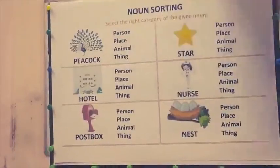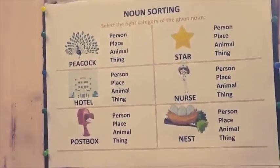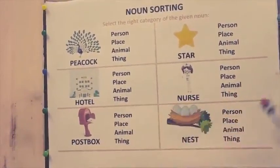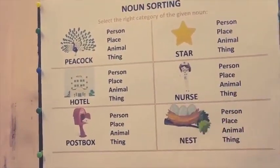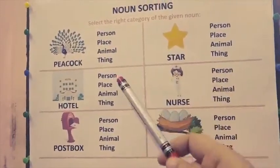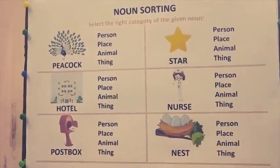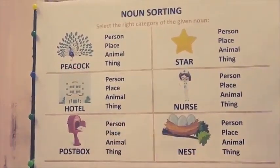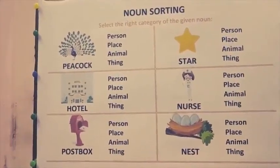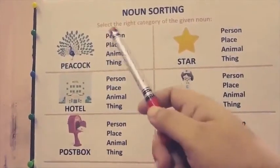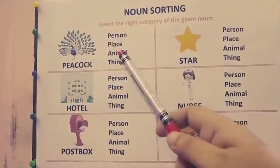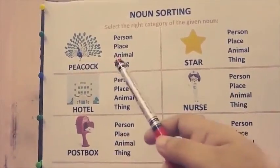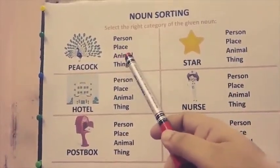Now children, let's do some joyful activity. Here there are different pictures and you have to tell me which category this picture belongs to. First — peacock. Select the right one. Is it a person, place, animal or a thing? Yes, it's an animal.